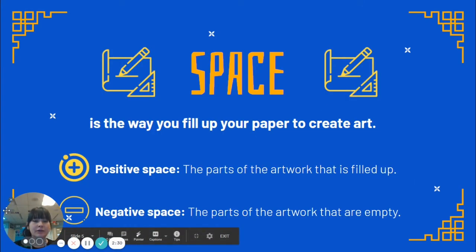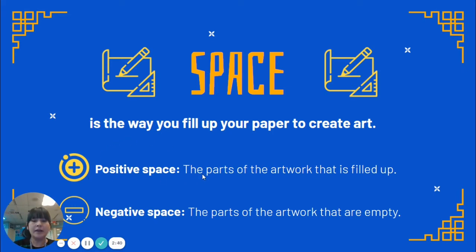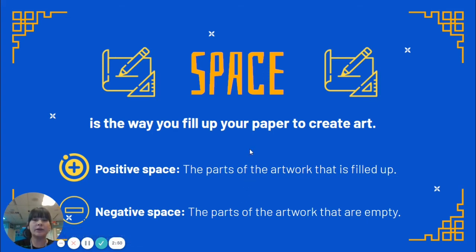In this project, we're going to be learning the element of art called space. Space in art is the way you fill up your paper to create your artwork. Positive space is the parts of the artwork that are filled up — that's where you do your actual drawing. The negative space is the parts of the artwork that are empty, so that might be the sky or the ground where it's kind of empty and there's really not much happening.